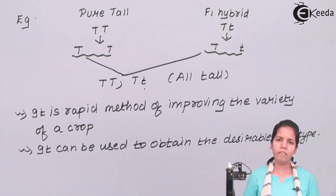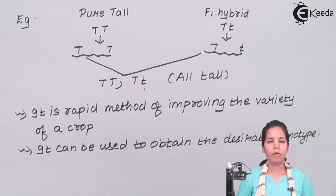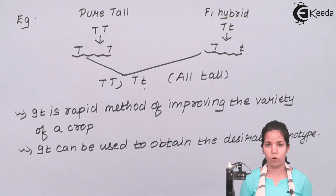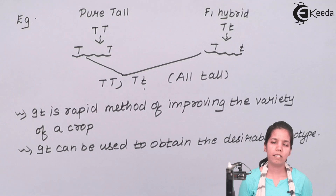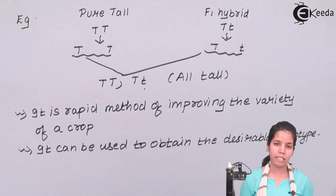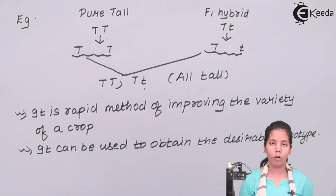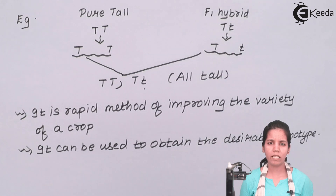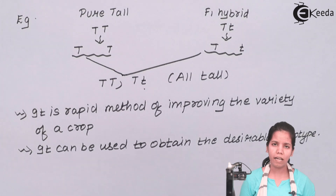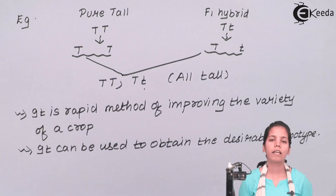Whenever Mendel did a test cross or back cross, he always made sure to choose an F1 generation crossed with a pure plant. For example, in certain cases he used a pure dwarf, that is small t small t, with a hybrid plant that is capital T small t. In this case, the results were capital T small t and small t small t, and the ratio was one is to one. By doing this, he came to a few conclusions and results. I hope you are all clear with this concept of back cross. Thank you.